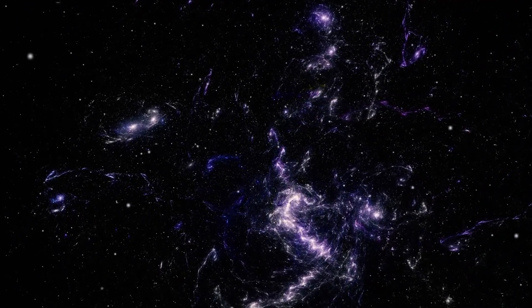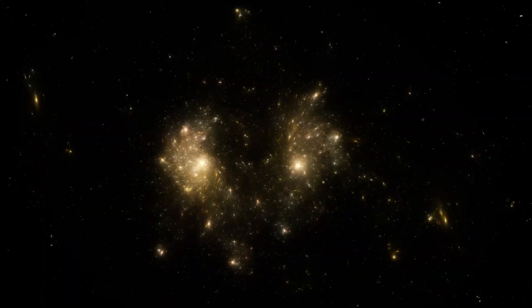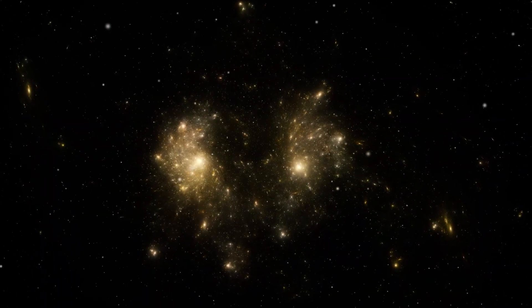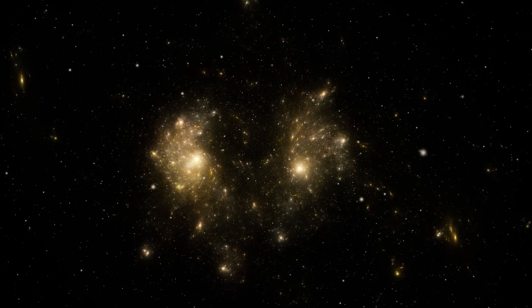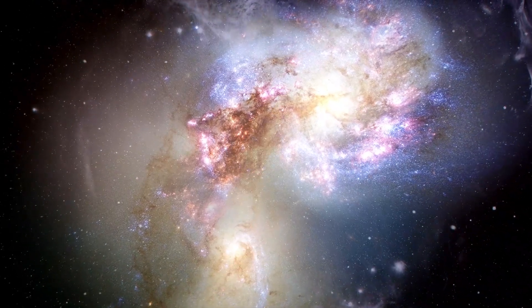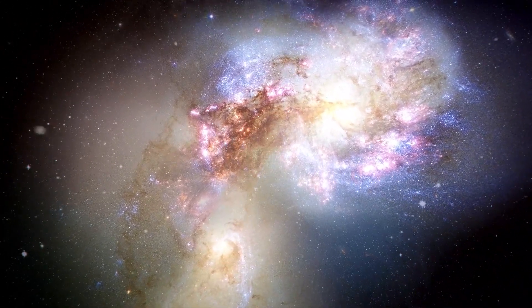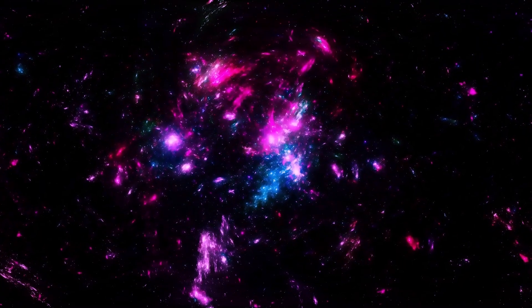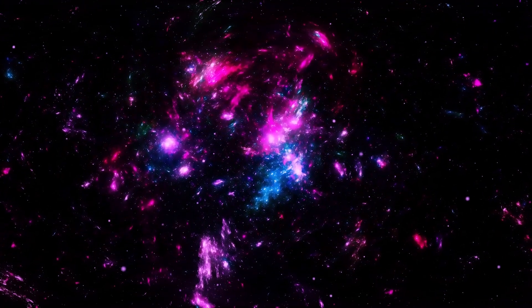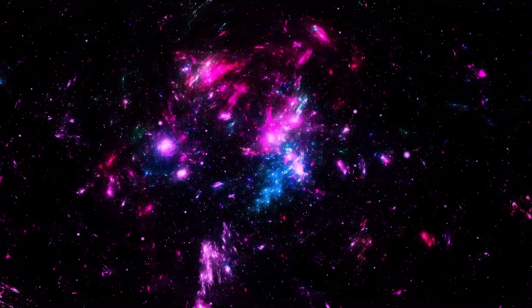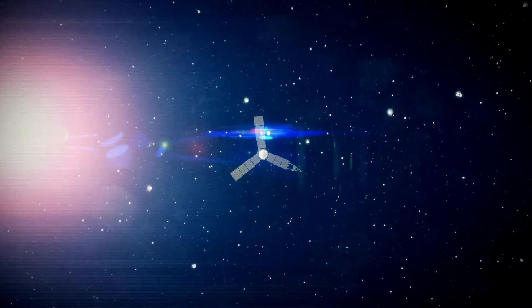Within Boötes are two superclusters, both approximately 1 billion light-years from Earth. The first is about 830 million light-years away, while the second is behind it at a similar distance. Although a comprehensive study of these superclusters has not yet been conducted, they are known to be considerably larger than the Virgo supercluster.